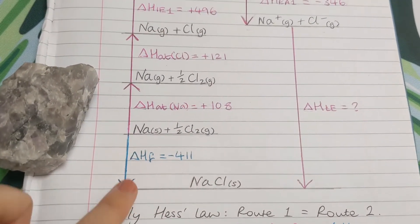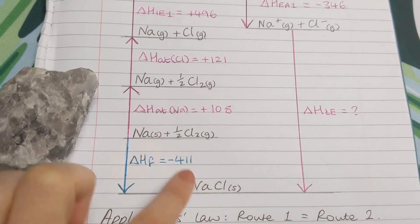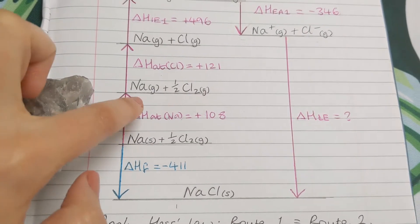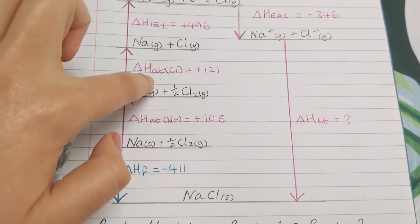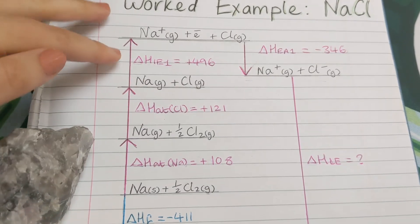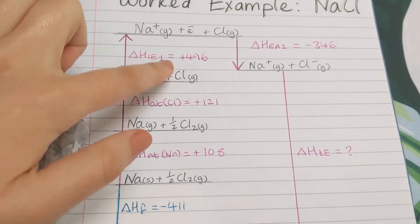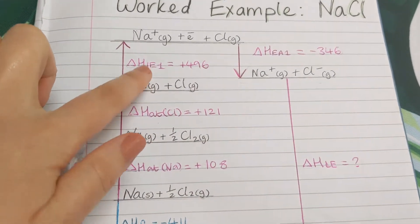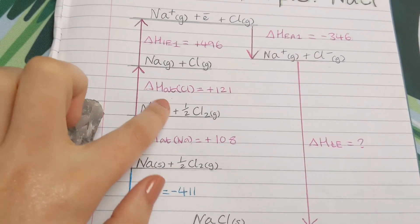So we've got formation of the ionic solid, atomisation of the sodium and the chlorine. And next we've got first, that's the number one, ionisation energy. So these are just the abbreviations.